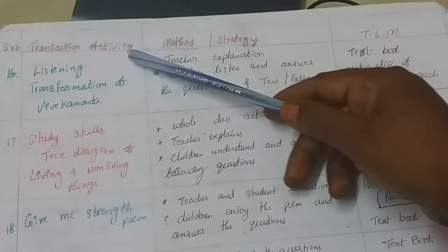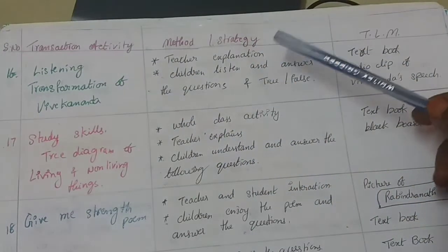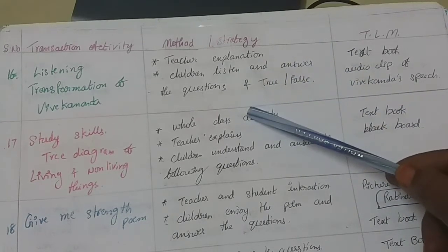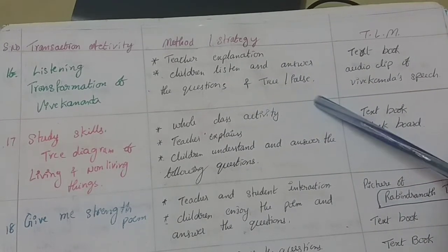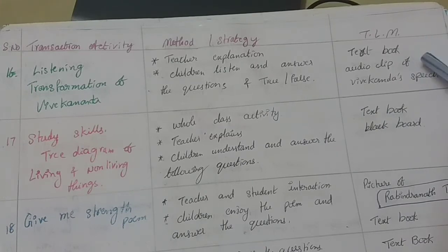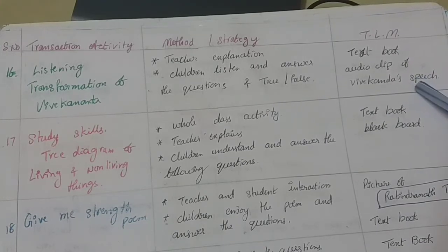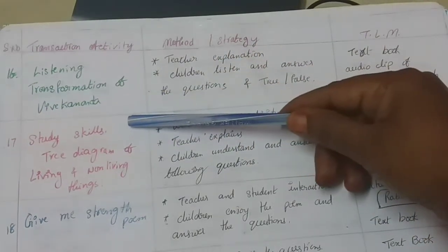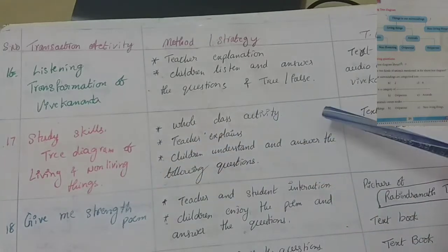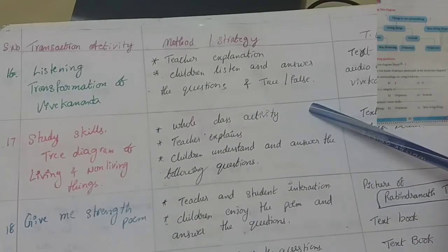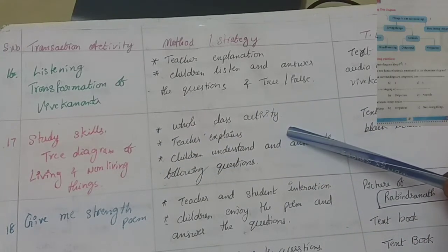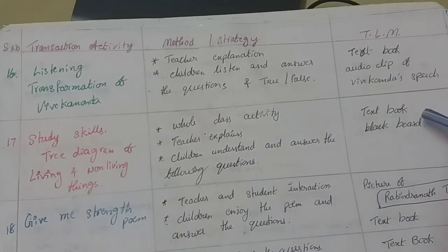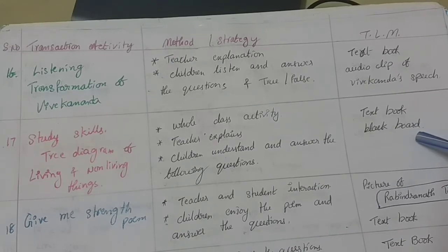In period 16, we have the listening passage: 'Transformation of Vivekananda.' It is a teacher explanation. Children listen and answer the questions, including true or false. TLM: textbook and an audio clip of Vivekananda's speech. In period 17, we explain study skills of living and non-living things. It is a whole class activity where the teacher explains and children answer the following questions. TLM: textbook and blackboard.